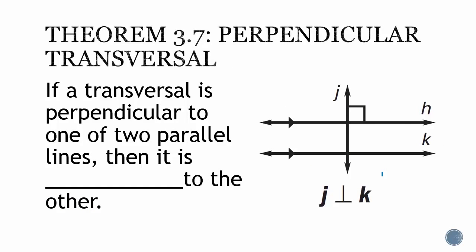Theorem 3.7, perpendicular transversal. If a transversal is perpendicular to one of two parallel lines, then it is perpendicular to the other. That means if my transversal cuts two or more parallel lines and creates a 90-degree angle with one of the parallel lines, then it automatically creates a 90-degree angle with the other parallel line.